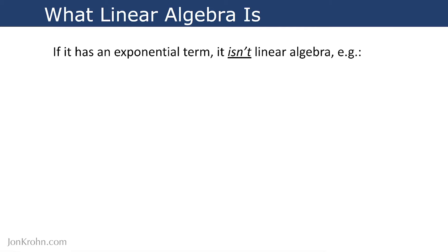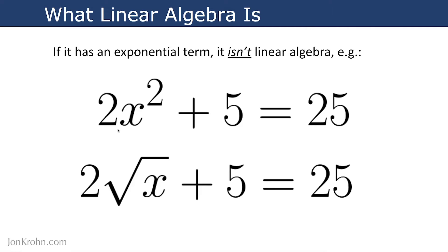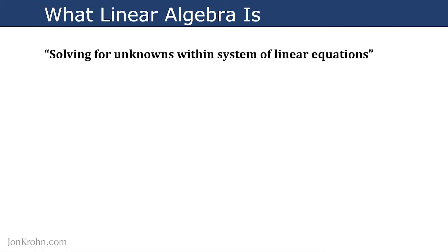So that's what algebra is. Now, to dig into what linear algebra is a bit more, it isn't linear algebra if it has an exponential term. So, for example, an equation that has 2x squared plus 5, well, that isn't linear. It's a non-linear transformation. And then a square root, that's also a non-linear transformation. So this equation is also not linear algebra. To give you a really nice and tidy definition of what linear algebra is, we could say that it's solving for unknowns within a system of linear equations.